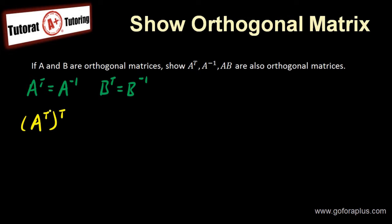So start off with A transpose transpose. This equals A inverse transpose, because I know that A transpose is A inverse. So I just replace it in the brackets. So once I replaced it, I can actually switch the T and the minus one.